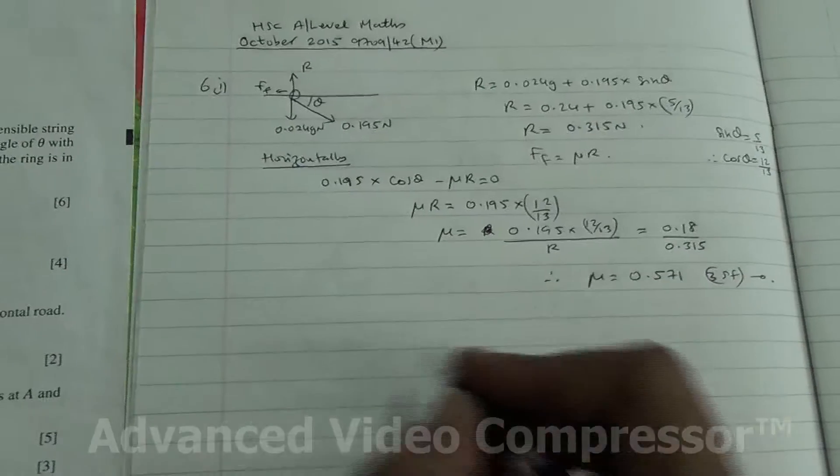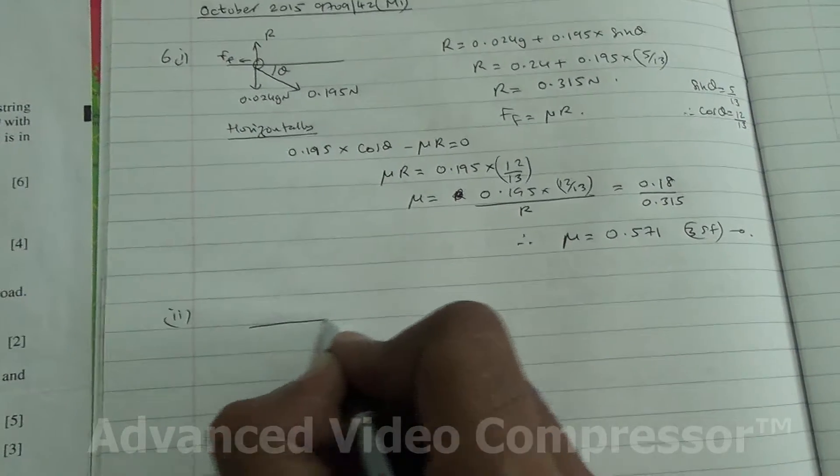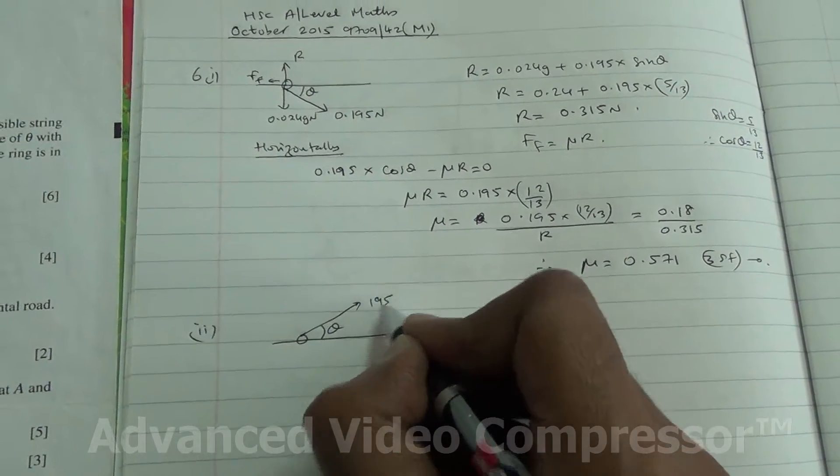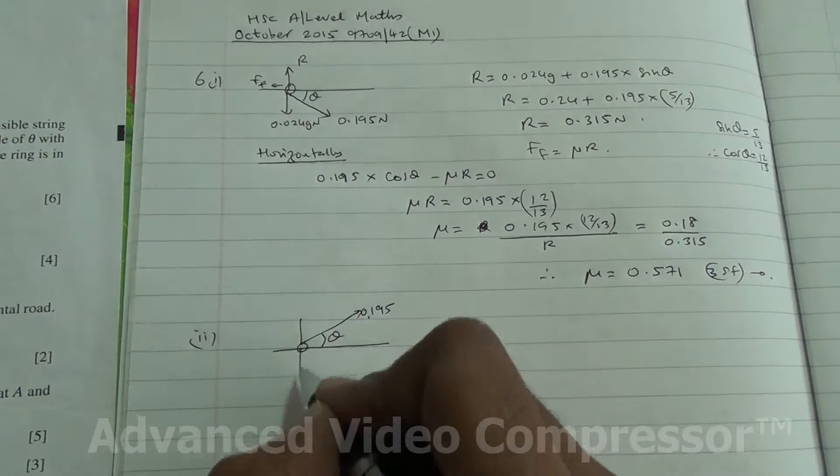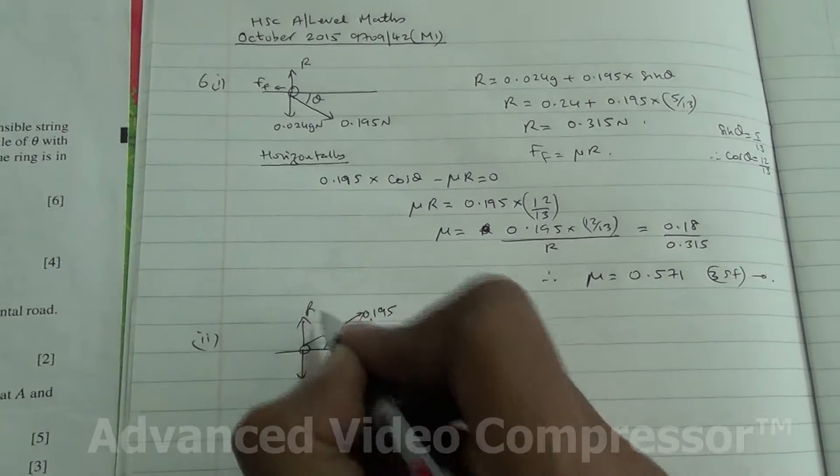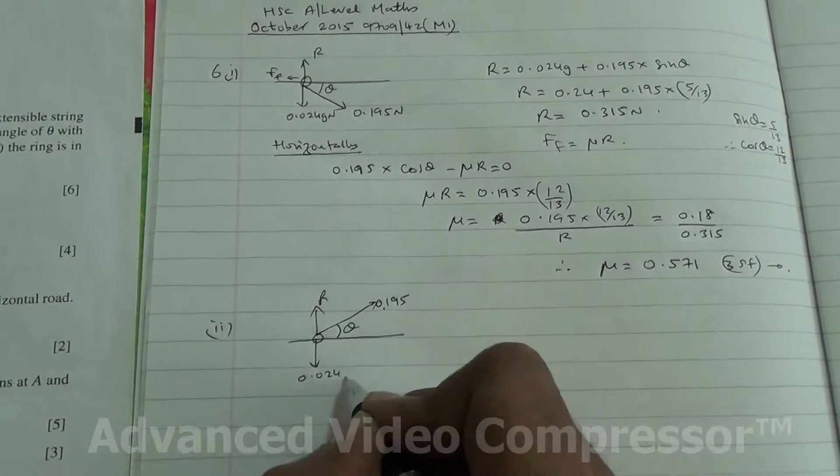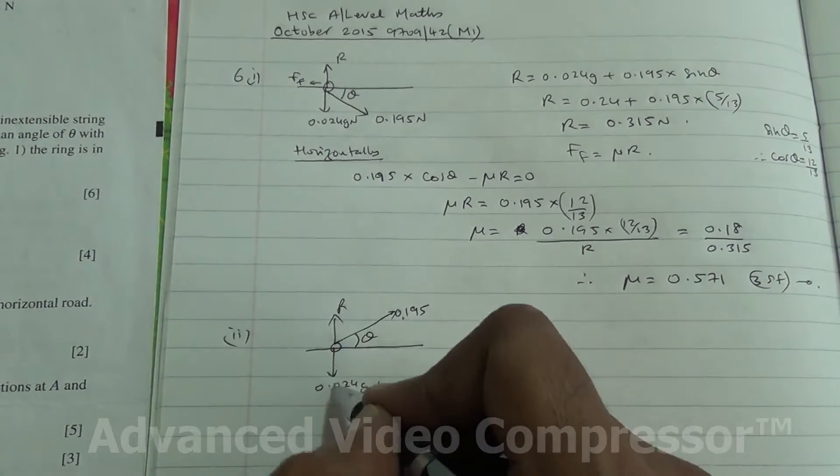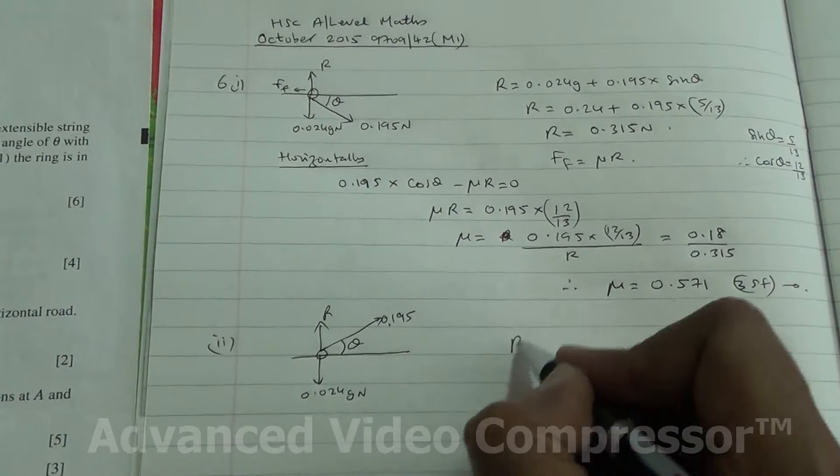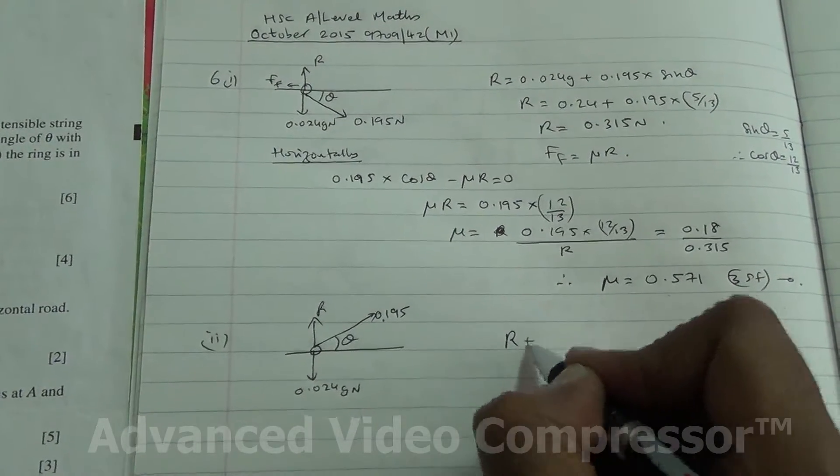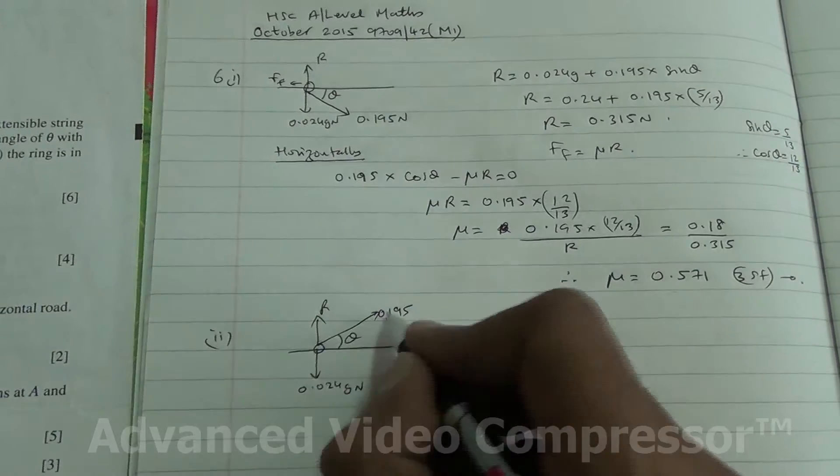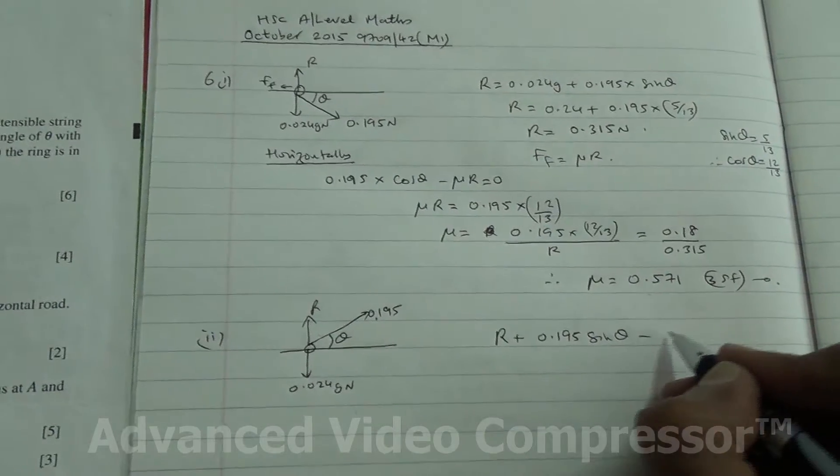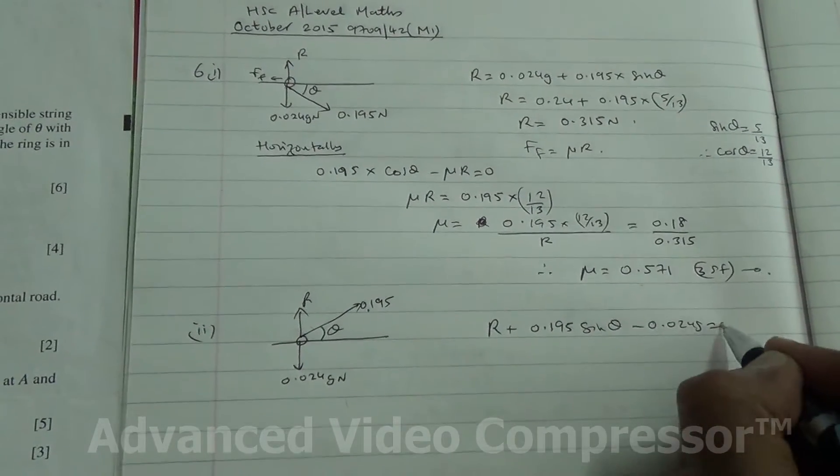Now for the second part, we are told that the ring has moved, and it is now in this position with theta. This is 0.195. Okay, so again, we can resolve vertically, this is R, 0.024 g newton. So if we resolve vertically, we have these two forces minus this, it's going to be equal to 0.195 times the sine of theta, doesn't contain the angle, minus 0.024 g is equal to 0.